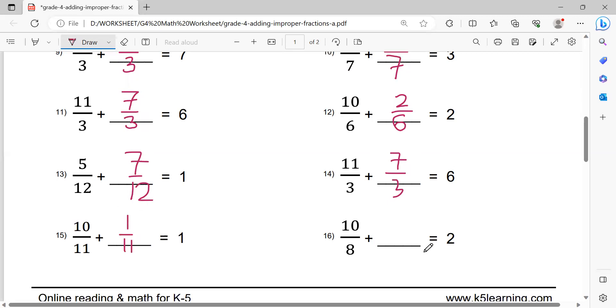Number 15. 8 times 2 equals 16, minus 10 equals 6. 6 over 8.